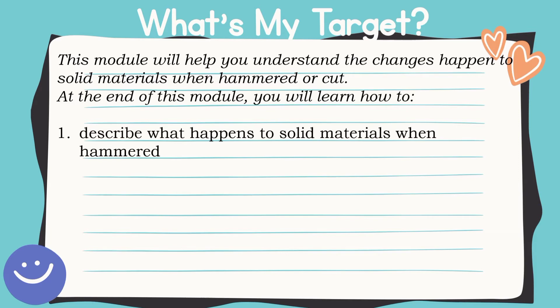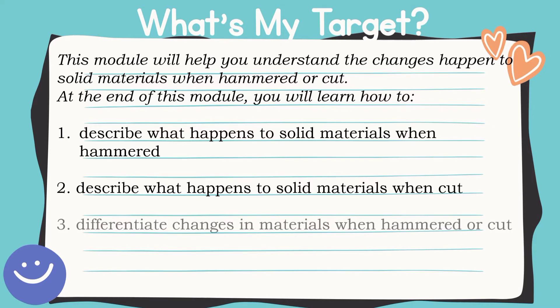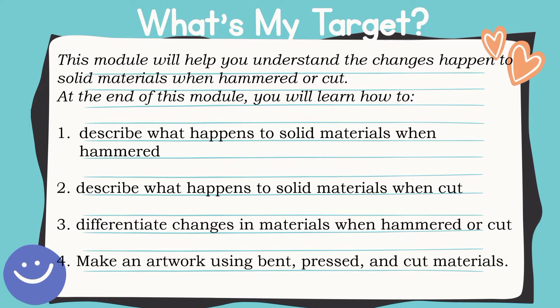At the end of this module, you will learn the following: 1. Describe what happens to solid materials when hammered. 2. Describe what happens to solid materials when cut. 3. Differentiate changes in materials when hammered or cut. 4. Make an artwork using bent, pressed, and cut materials.